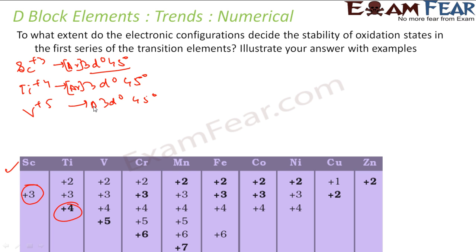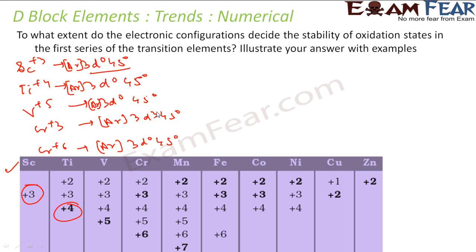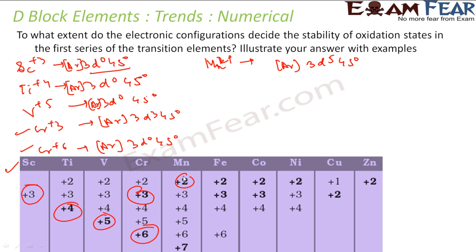For chromium, Cr⁶⁺ is 3d⁰ 4s⁰ (all empty, stable) and Cr³⁺ is Ar 3d³ 4s⁰, a stable t₂g configuration. Mn²⁺ is Ar 3d⁵ 4s⁰ — stable half-filled. Mn⁷⁺ is Ar 3d⁰ 4s⁰ — stable all-empty. These oxidation states are all governed by electronic configuration.